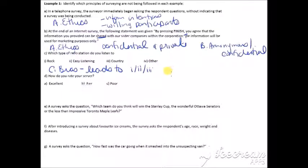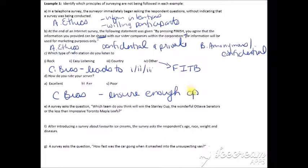So we want to make sure that there's enough options and maybe like fill in the blank short form. How do you rate your server? Excellent, fair, poor. So there's not enough options here. So C, there's a bias. We have to ensure there's enough options. E, a survey asked the question, which team do you think will win the Stanley Cup? The wonderful Ottawa Senators or the less impressive Toronto Maple Leafs.